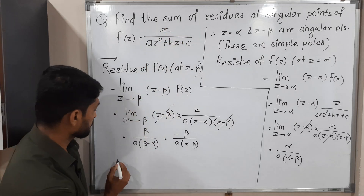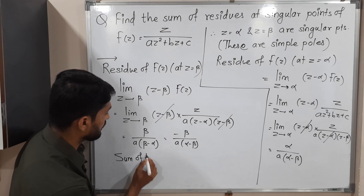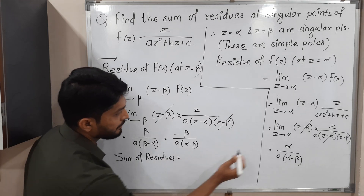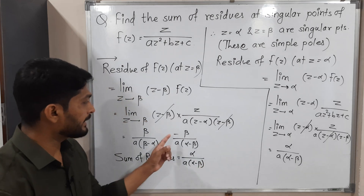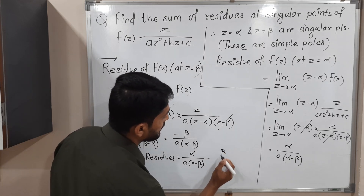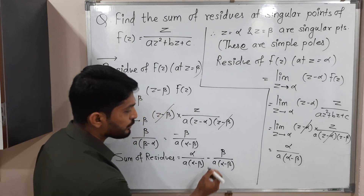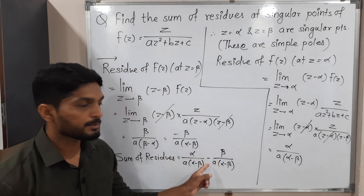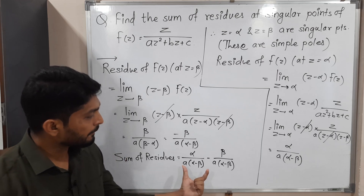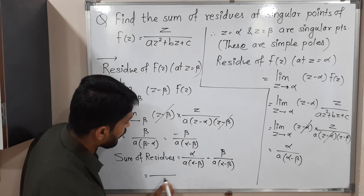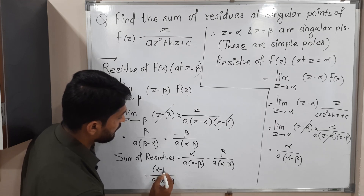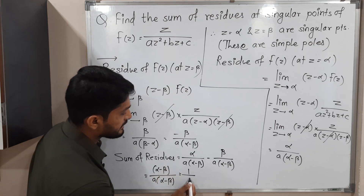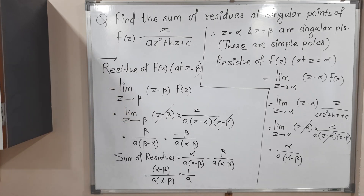The last task is to take the sum of residues. Adding alpha/[a(alpha − beta)] and −beta/[a(alpha − beta)], the denominator is the same, so we write the common denominator a(alpha − beta) and add the numerators: alpha − beta. The (alpha − beta) terms cancel and the sum of residues equals 1/a. Example is over — thank you, see you in the next video.